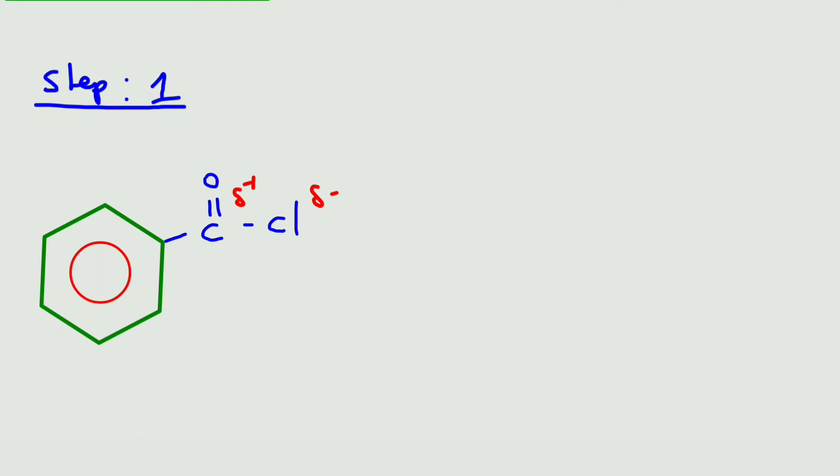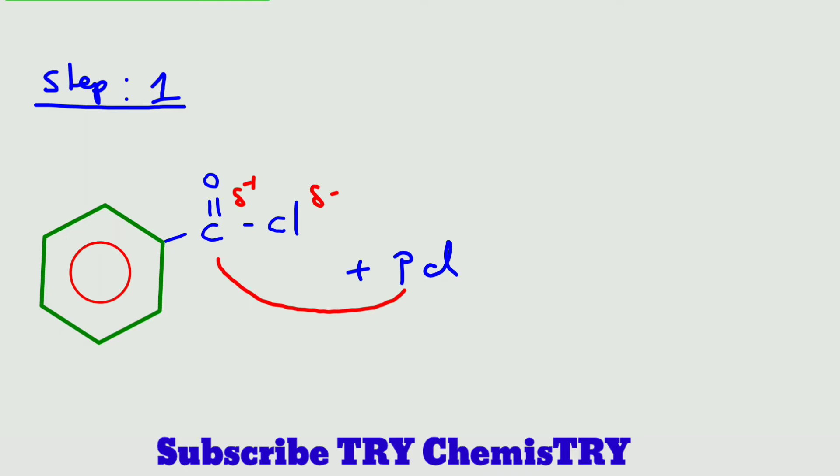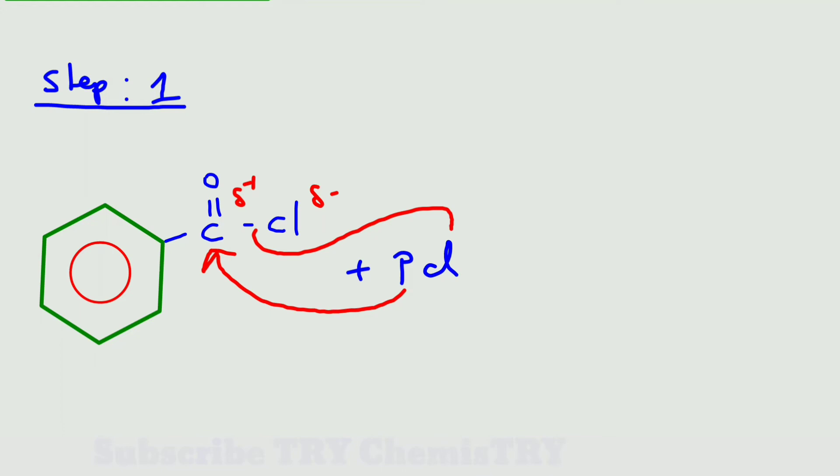Carbonyl carbon is an electropositive element. Here, when the benzoyl chloride reacts with palladium, palladium attacks this carbonyl carbon. At the time, the chlorine is bonded with palladium, and the bond between the carbon and chlorine will break.